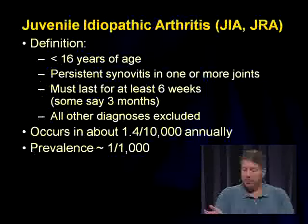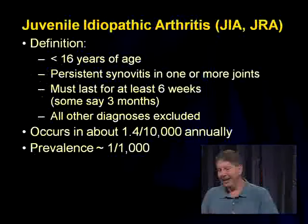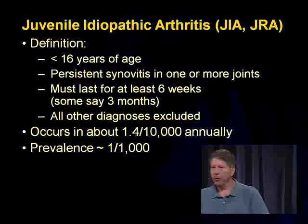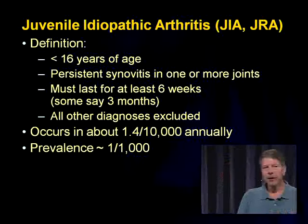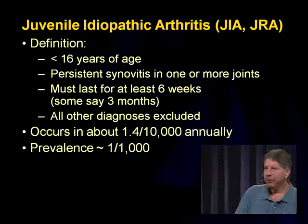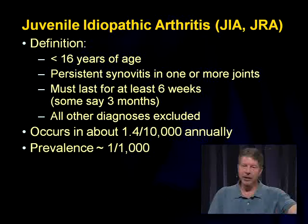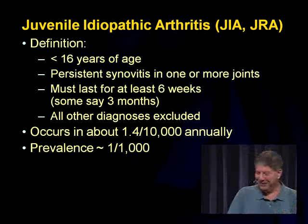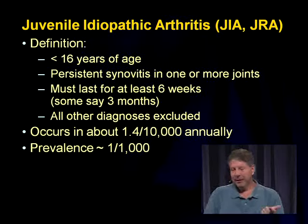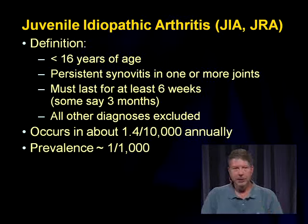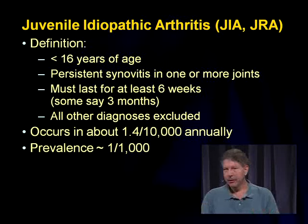I want to talk about the most common thing first: juvenile idiopathic arthritis, or JIA, formerly known as JRA. By definition, it has to begin when they're younger than 16. If they give you a 17-year-old presenting for the first time, don't think JIA. They've got to have synovitis that's persistent in one or more joints, lasting at least six weeks — most rheumatologists say three months. Then you have to exclude everything else. The prevalence is about one in 1,000, so it will definitely be on your test.